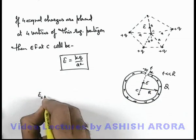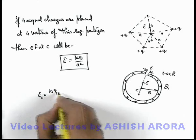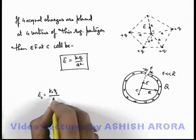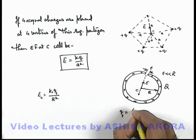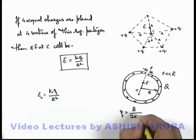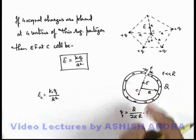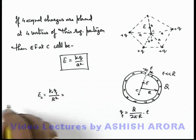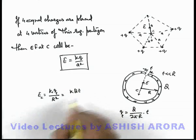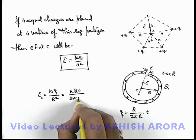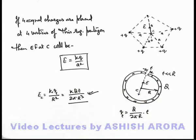In this situation, the electric field at the center can be written as k times the charge on thickness t divided by r². The charge on thickness t can be written as (q / 2πr) × t, which is a very small charge. Substituting, the electric field becomes kqt / (2πr³). This is the result we use for the electric field at the center in this situation.